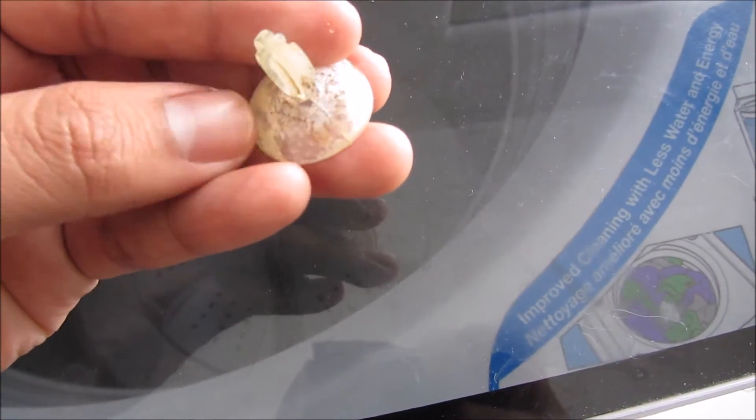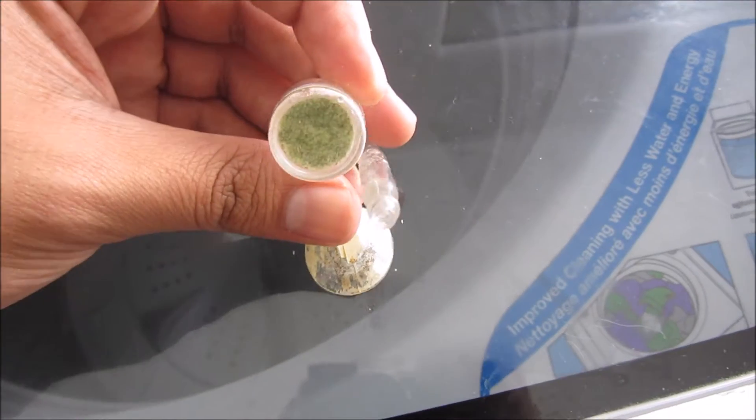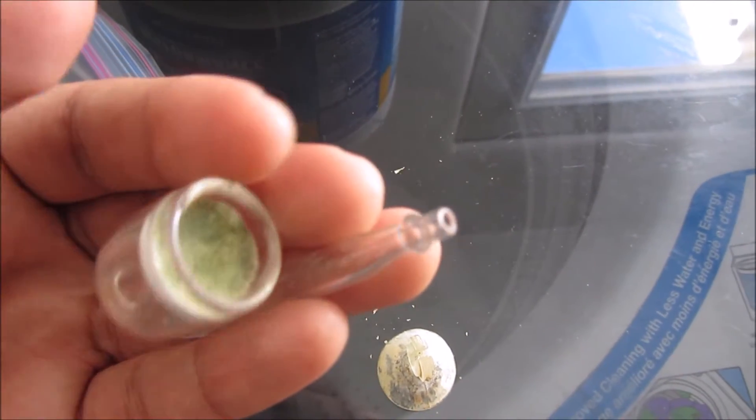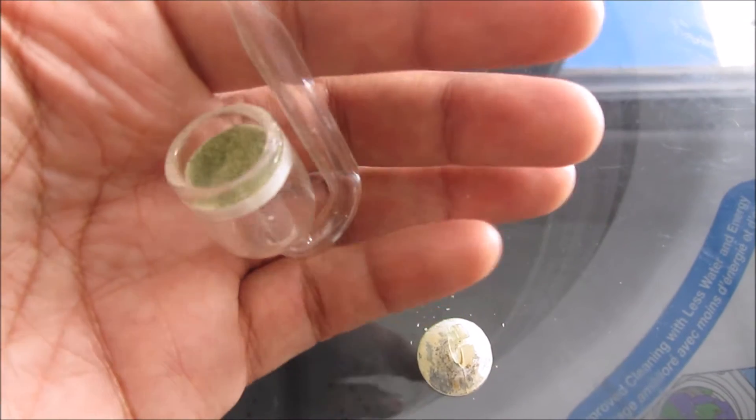It can prevent your diffuser from working at its full potential, and if you have a pristine looking tank, it can make it look kind of sloppy. So let's go over a fast, cheap, and easy way to completely clean your diffuser.